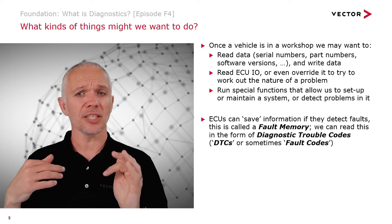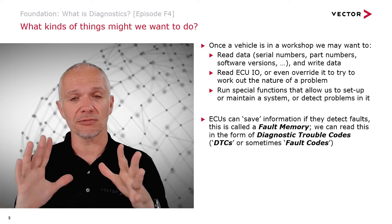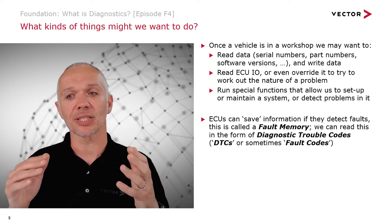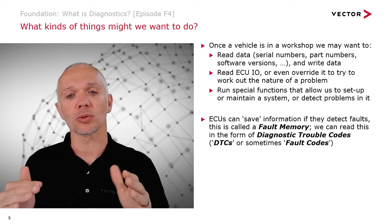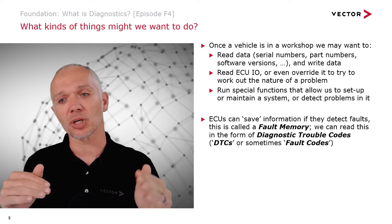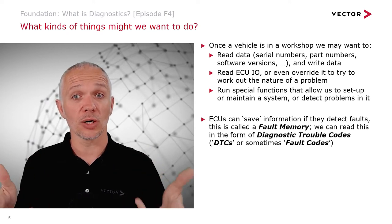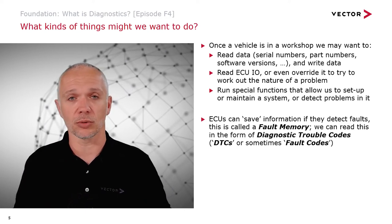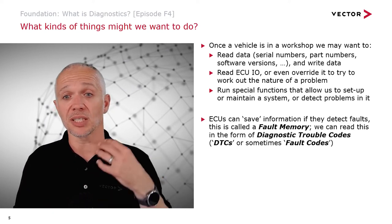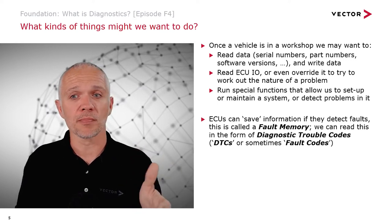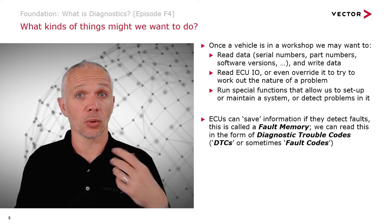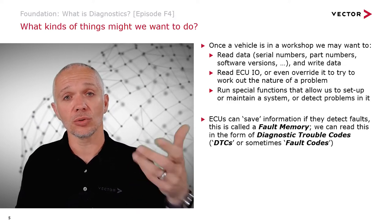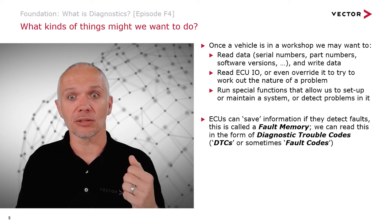Additionally, ECUs are able to save information if they detect faults — this is called a fault memory. We can read information out of the fault memory in the form of diagnostic trouble codes, or DTCs, which are also sometimes called fault codes. You may have gone to a workshop where they said there's a DTC in the engine or in the brakes. That's what this means: the ECU has detected something which could be a problem and is reporting it when a workshop technician connects a diagnostic tool and reads the fault memory.